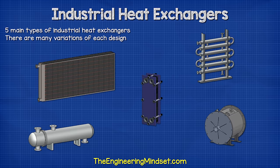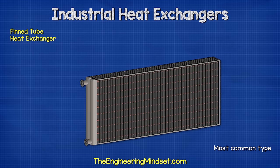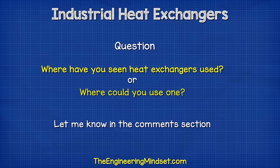There are five main types of industrial heat exchangers, although there are many variations of each design. Let's look at a fin tube heat exchanger first, which is probably the most common design used. Tell me in the comments where you've seen different types of heat exchangers used and what for, or what ideas you have for where to apply them.